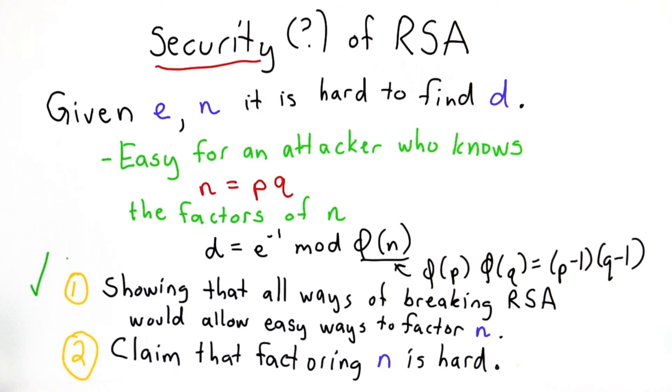But assuming all of those things are good, then we've shown that all the obvious mathematical ways to break RSA are equivalent to factoring n.